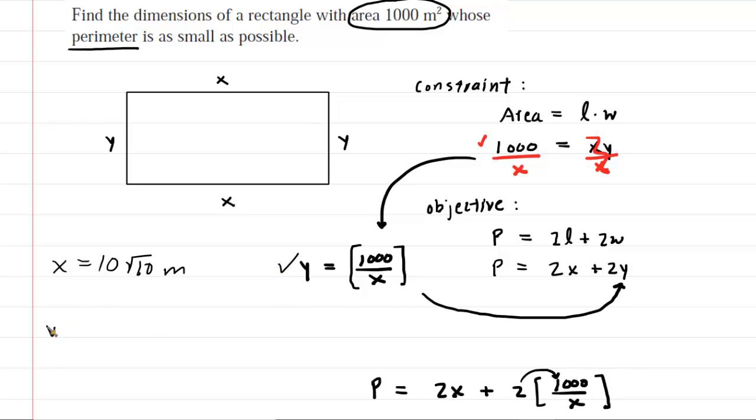And then y, we can see, is 1000 divided by x. So we would have y is equal to 1000 divided by 10√10. We can simplify that because 1000 divided by 10 is just 100. So you have 100 over √10. We can rationalize the denominator by multiplying it by √10, but also the numerator by √10. So now we have 100√10 divided by √100. When you multiply 10 and 10, you get 100. The square root of 100 is just 10.